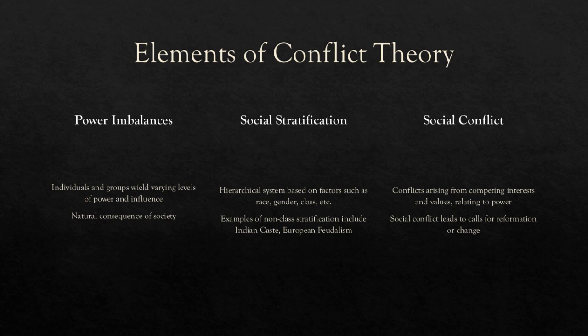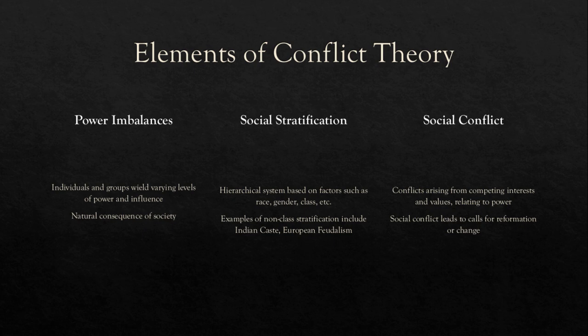A core element of conflict theory is the concept of power imbalances. In society, individuals and groups wield varying degrees of power and influence, which profoundly shape their experiences and access to resources. These power imbalances are reflected within the classes of a capitalist society, such as the standard archetypes of the bourgeoisie, or ruling elite, and the proletariat, or working class. This imbalance can lead to stark disparities in life opportunities, access to resources, and quality of life, further exacerbating social inequalities as a whole.